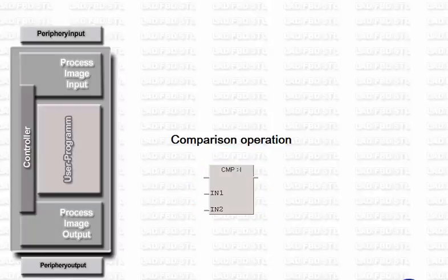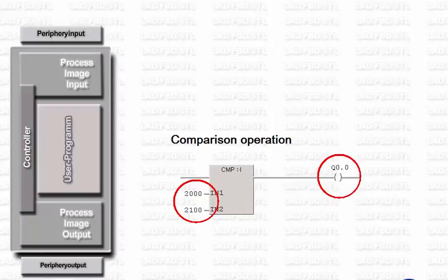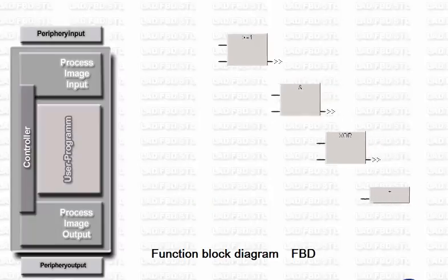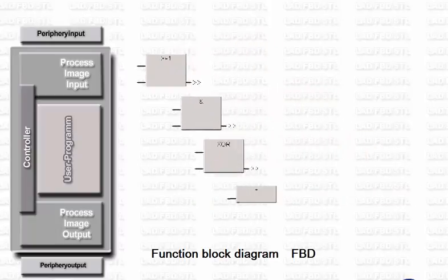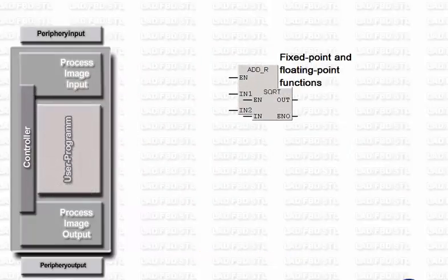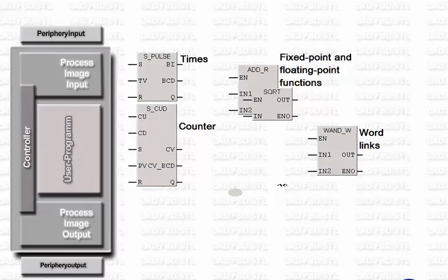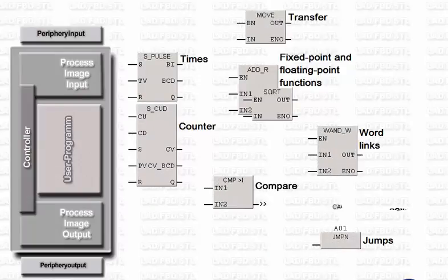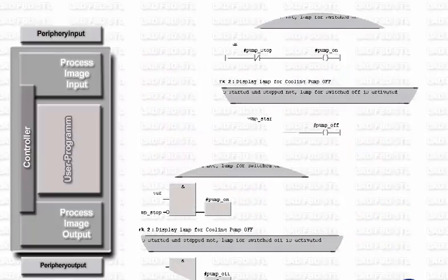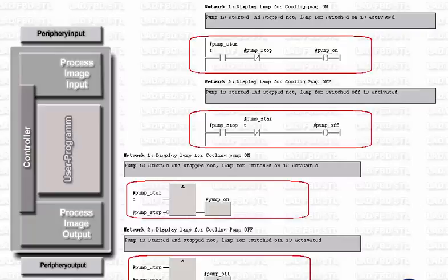Such a box can have several inputs to receive input values and provide the result to an output. In the programming language Function Block Diagram, or FBD, boxes are also used to implement binary combinations of signal states. As in LADDER, more complex functions are implemented by special program elements which are supplied with the required variables through the inputs. To structure the program, both languages use networks which terminate one combination sequence each, and thus represent the smallest structuring unit.